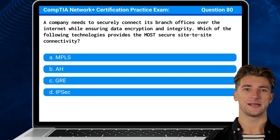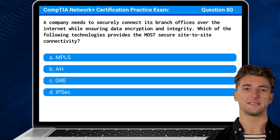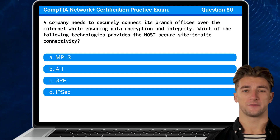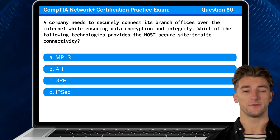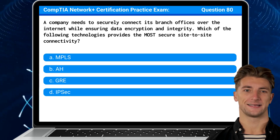Question 80: A company needs to securely connect its branch offices over the internet while ensuring data encryption and integrity. Which of the following technologies provides the most secure site-to-site connectivity?